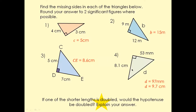For question four, I first converted 53 millimetres into centimetres to make it easier. Always make sure units are consistent. To convert millimetres into centimetres you divide by 10, giving 5.3 centimetres. Then we do 5.3 centimetres squared, which is 28.09, and add 8.1 centimetres squared, which gives 93.7. The square root of 93.7 is 9.7 rounded to two significant figures. Always read the question carefully and round to the required number of significant figures.